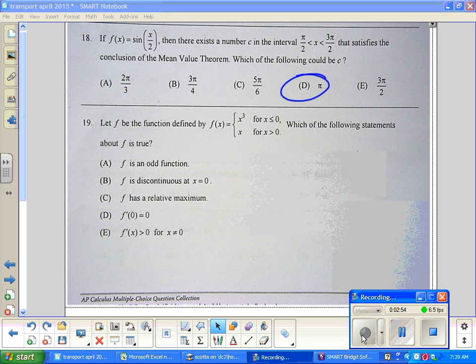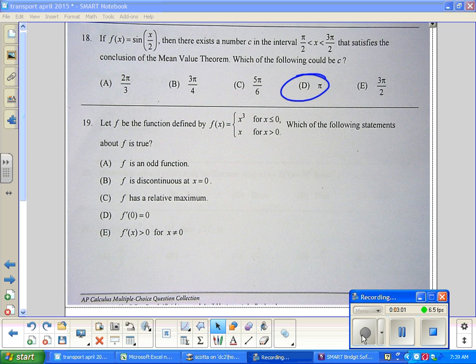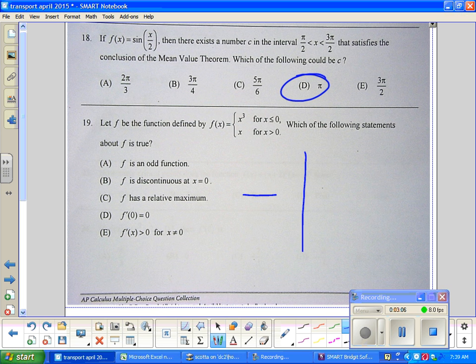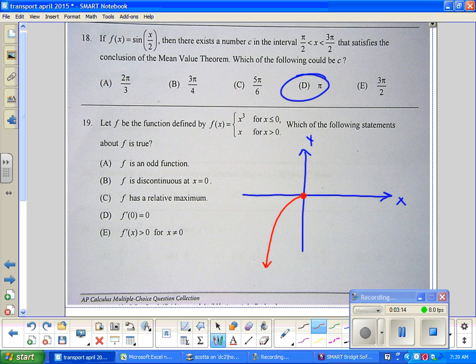Problem 19: Let f be a function defined by f(x) equals x³ for x less than or equal to 0, or x for x greater than 0. Which of the following statements about f is true? Now you don't need a graph, but I'm going to take one second for the sake of learning here and make a graph. Now it's continuous - there's x³, there's x.